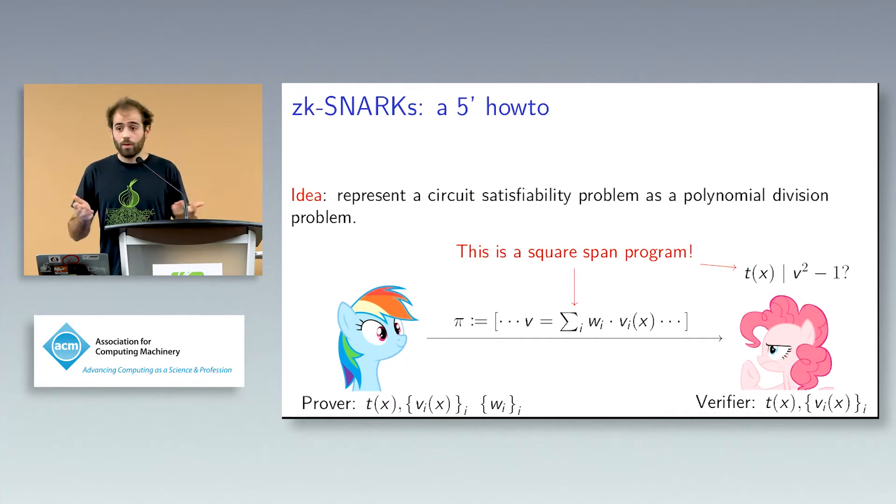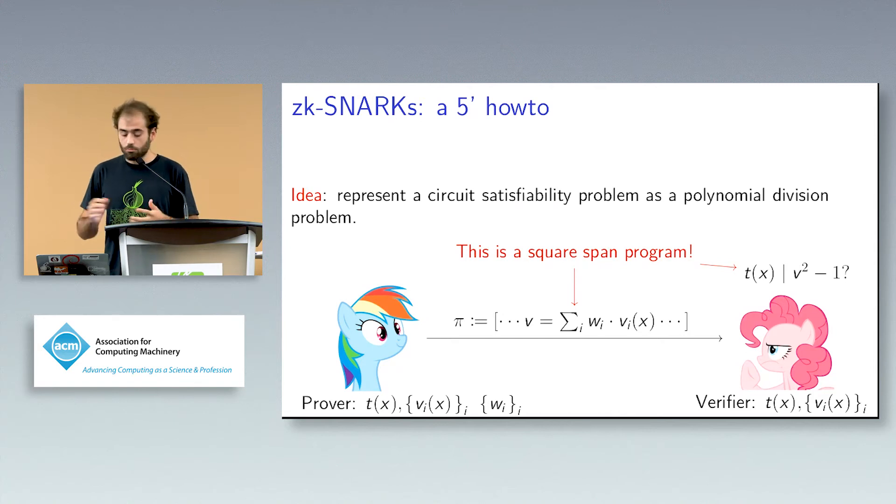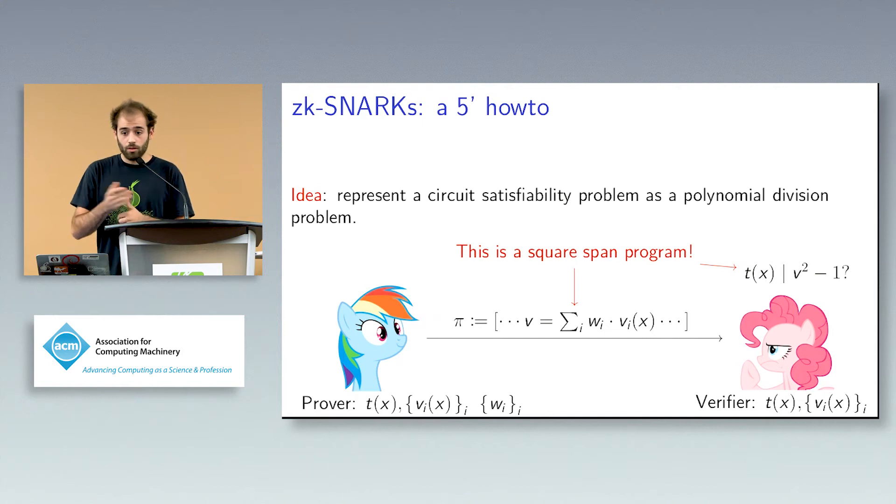Actually what we send is not really these, we do not really test for this division. We actually send a multiple and we sort of see that it's in the correct span of these VIs. But the idea is always there. You can take a circuit that should be satisfied by W, translate it into polynomials, and check for this divisibility. And this actually is a square span program. So you should have some sort of understanding of the title by now. And there are other ways in which you can formalize or represent a circuit in this polynomial divisibility way, there are, for example, quadratic arithmetic programs, and quadratic span programs, but the underlying idea is sort of in the same vibes.